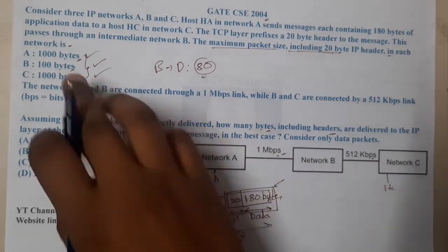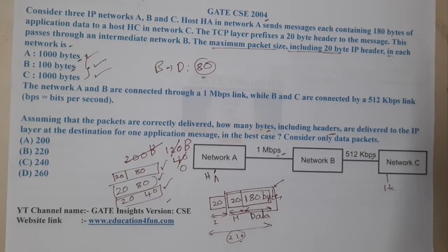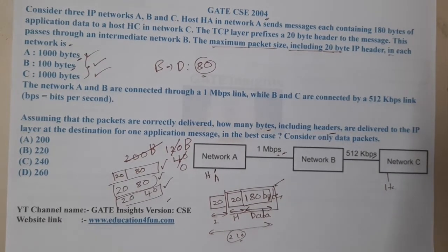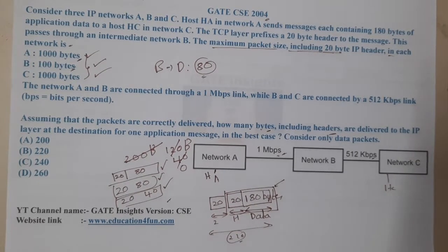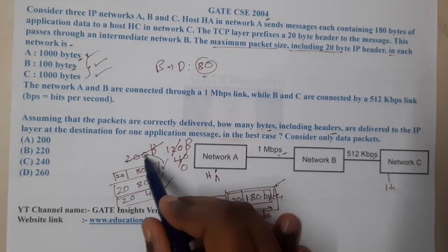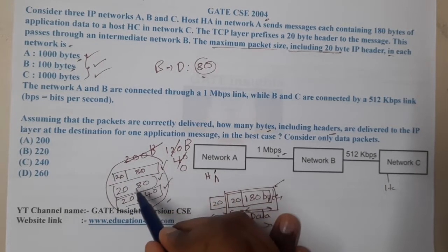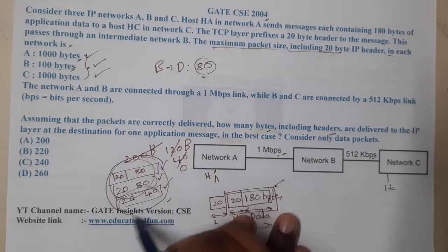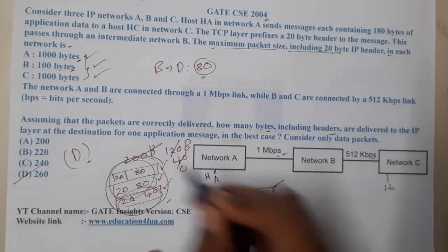Rather than speed, this directly depends on packet sizes. The total amount of data received by C including headers is: 80+20 + 80+20 + 40+20 = 200 + 60 = 260 bytes. So option D is the correct answer.